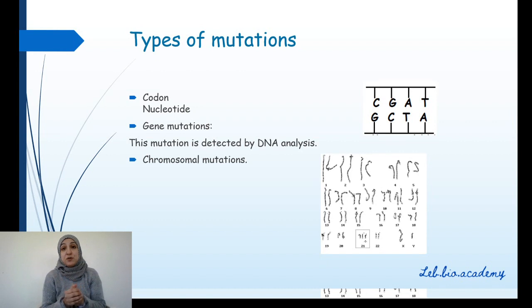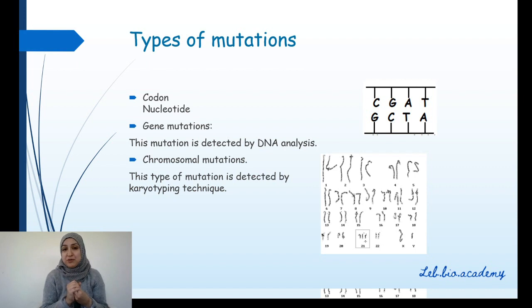However, in the chromosomal mutations, you're going to have a change in the number of chromosomes or the shapes of chromosomes. Please look at this karyotype. You will find out that in chromosome number 21, we have one extra chromosome 21. Here we are talking about three chromosomes 21 instead of two. This mutation is called chromosome mutation. This type of mutation is detected simply by making a karyotype or what we call a karyotyping technique.